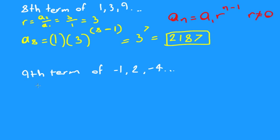Let's see. Now, the 9th term of negative 1, 2, and negative 4. First, we get our ratio. Ratio equals the second term over the first term. So 2 over negative 1, that would be equal to negative 2.